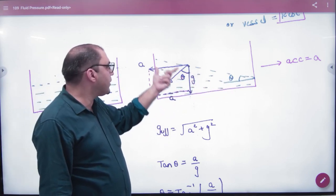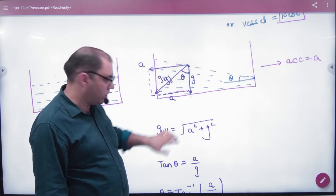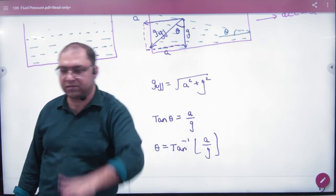So what will happen here? If this is A, this is G. So tan theta equals A divided by G. A and G given in question. A and G given will answer from there. Theta equals tan inverse A by G. So we will answer the question.